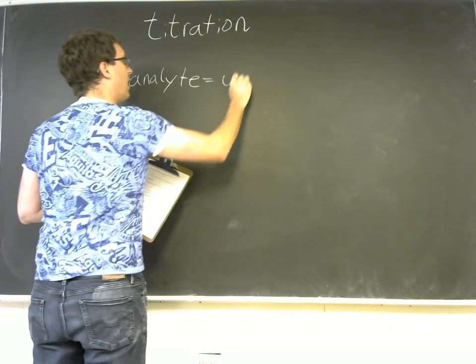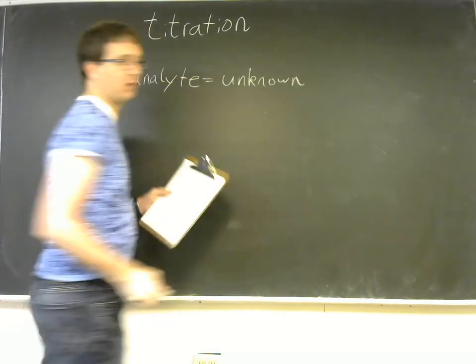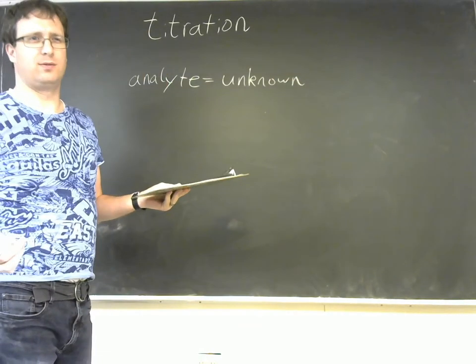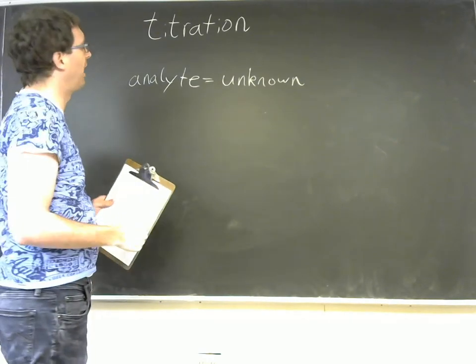And because you added that base slowly and you were able to measure exactly how much you added, you're able to then use a formula to figure out what was the initial concentration of your unknown. So the analyte is your unknown. That means you don't know the concentration. You need to know that it is an acid. You just don't know its concentration.